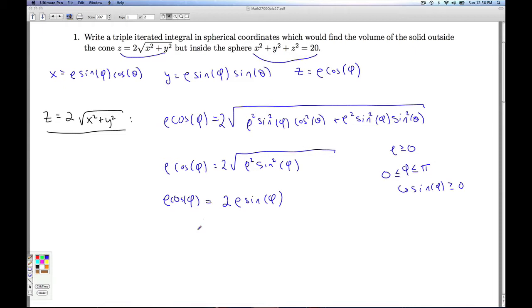There's factors in common, so I'm going to take everything to one side. I have rho cosine phi minus 2 rho sine phi is 0. I factor out the rho. I get cosine phi minus 2 sine phi is 0. So I either get the trivial case rho equals 0, or I get cosine phi is 2 sine phi.